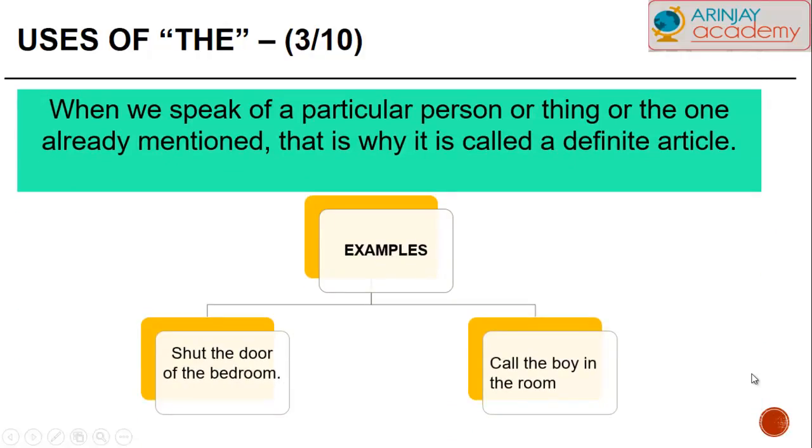When we speak of a particular person or thing or the one already mentioned, we use the article THE. For example, shut the door of the bedroom, or call the boy in the room.